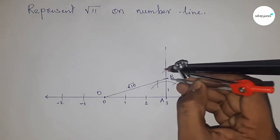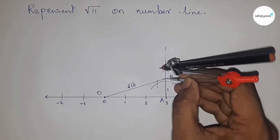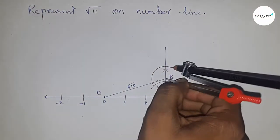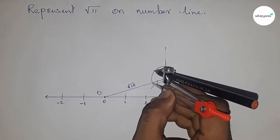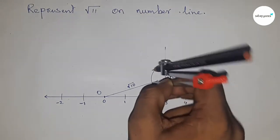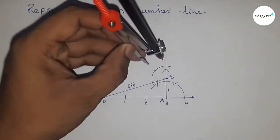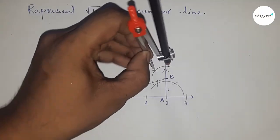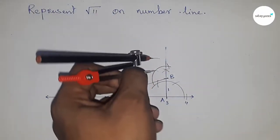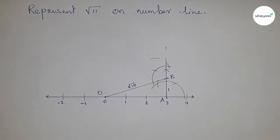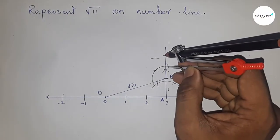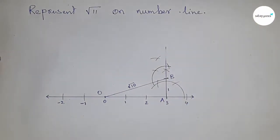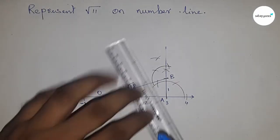Now construct a 90-degree angle at point B. Now join this.